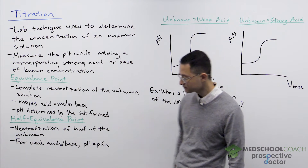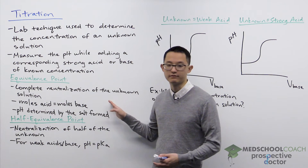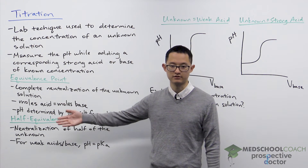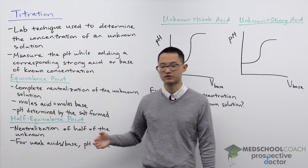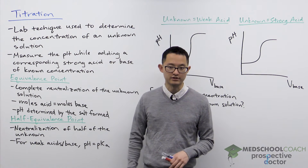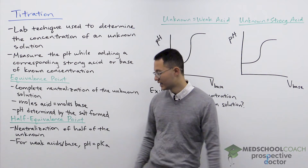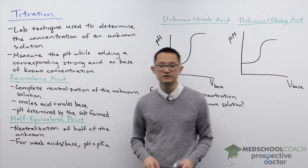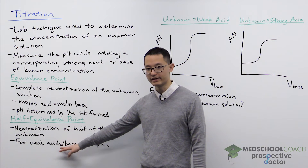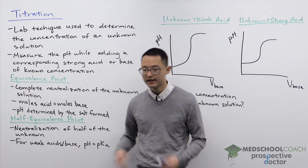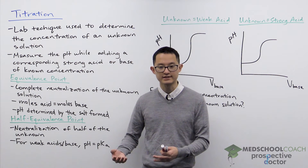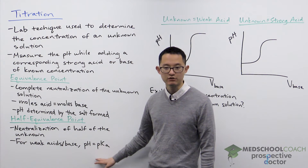We can also talk about the half equivalence point. The equivalence point is when you've added enough titrant to completely neutralize the unknown. The half equivalence point is at half of that volume on the titration curve, where half of your unknown has been neutralized. For weak acids or weak bases this is important: half of your acid has been converted to conjugate base, or vice versa. When you have equal quantities of a weak acid and conjugate base — or weak base and conjugate acid — you have a buffer where the pH equals the pKa.